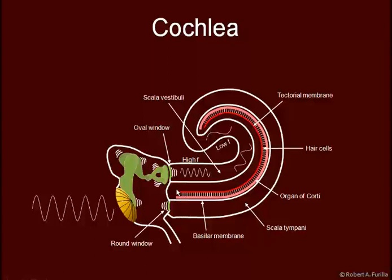This is the scala media right in here. We have hair cells, which we'll talk about more. Down here we have the basilar membrane and the tectorial membrane. This region is called the organ of corti. This region close here is called the base and the apex. At the base, we see high frequencies transduced. As the frequencies decrease, we start seeing them transduced farther and farther back, with the lowest frequencies in the back region.